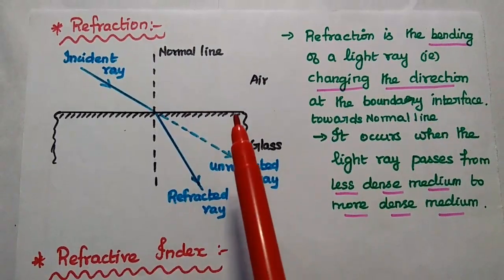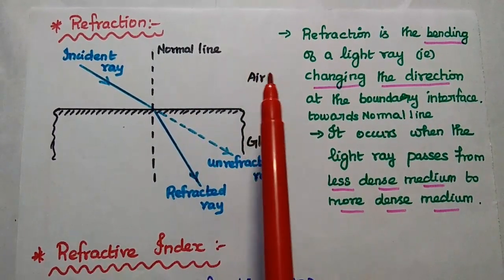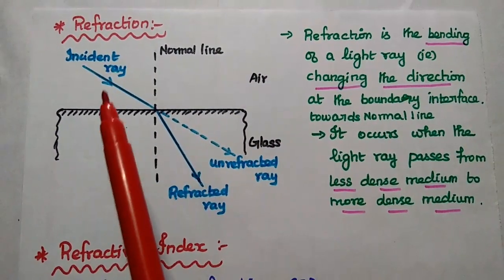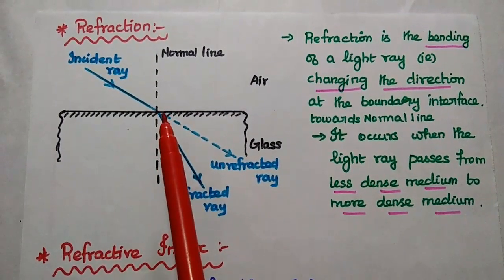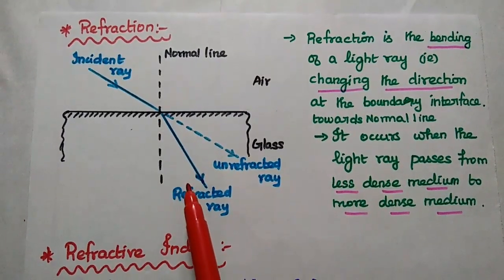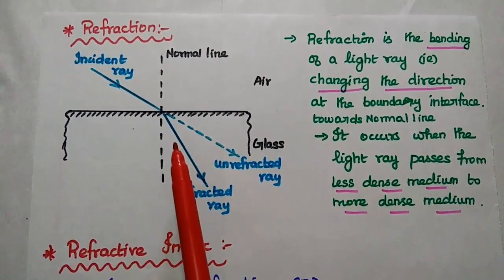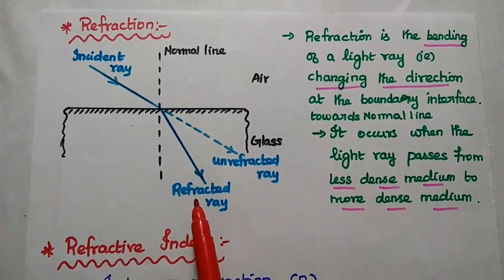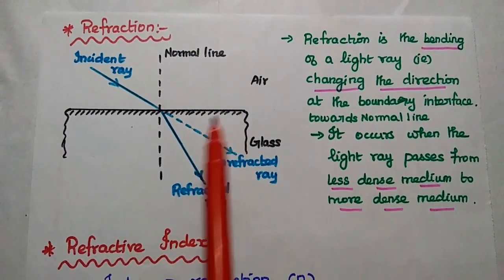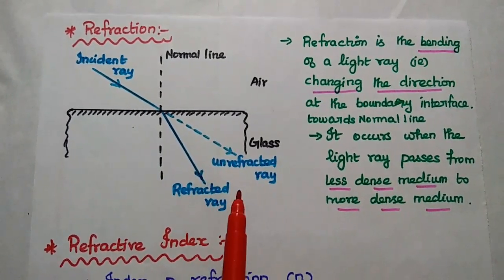The next one is refraction. Here we can consider two different media: a less dense medium and a more dense medium such as glass. When the light ray is incident at the boundary interface between these two media, the wave is refracted. Refraction means bending of the light ray — that is, it is changing its direction at the boundary interface. It occurs when the light ray passes from a less dense medium to a more dense medium. This is the refracted ray.